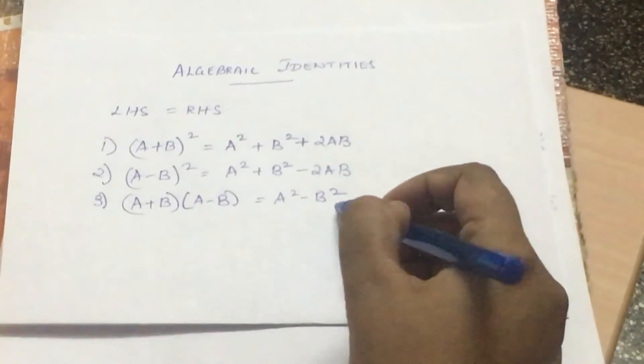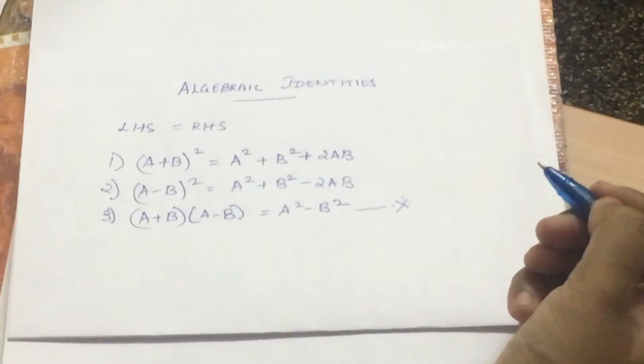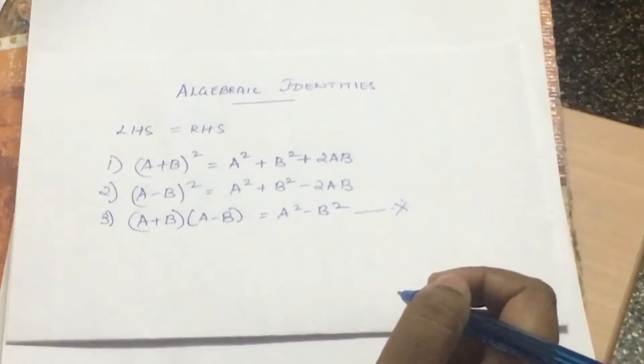And the third one would be (a+b)(a-b) which equals a² - b². Now, this third identity is pretty important and I will get to that why in some time. Let us quickly begin with the first one.